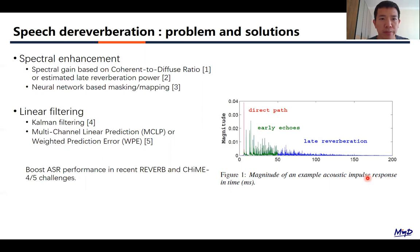Speech dereverberation algorithms in the literature broadly fall into two classes: Spectral Enhancement and Linear Filtering. In the first class, spectral gains are applied to the observation spectrum based on coherent to diffuse ratio or estimated late reverberation power or pre-trained neural networks. The linear filtering methods include common filtering and multichannel linear prediction. An efficient implementation of MCLP in the frequency domain, termed weighted prediction error, has shown to be very effective. In the recent Reverb and Chime challenges, WPE has greatly improved speech recognition performance and has gained popularity ever since.